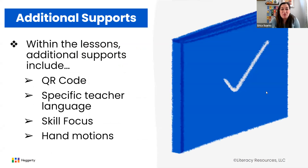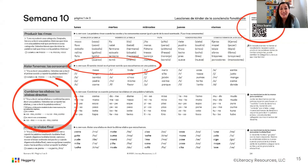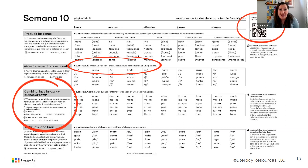In addition to the overview pages, we have incorporated some additional supports within the lessons. Some of those supports include a QR code, specific teacher language, the skill focus, and the hand motions. If you are looking at the far left-hand side of your curriculum, you will see that we have specific teacher language for those instructions — the teacher is invited to simply read these directions to explain to students what they will be doing for the day. You'll also see the skill focus highlighted, which is a wonderful piece to communicate to students the expectations for the activity you are about to begin. The QR code at the top of each page, when scanned, will take you to a landing page for the curriculum where you can view a sample lesson for that week, view additional skill tutorial videos, as well as other supports within our website.